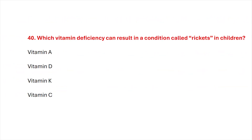Question number 40. Which vitamin deficiency can result in a condition called rickets in children? Correct answer is option B: Vitamin D.